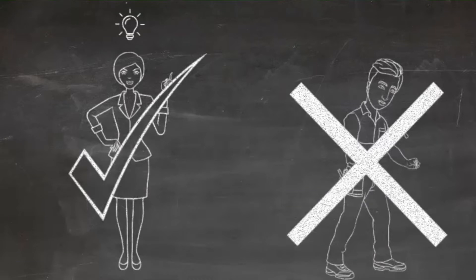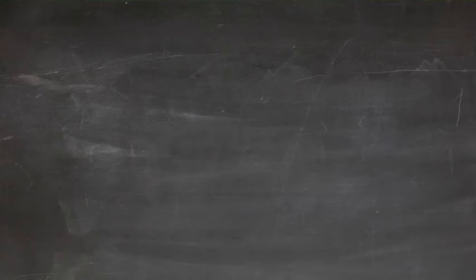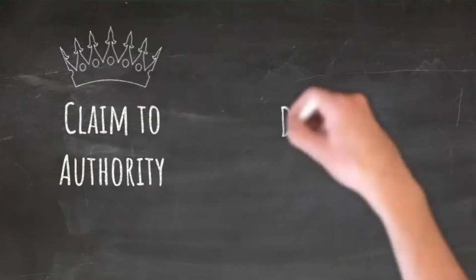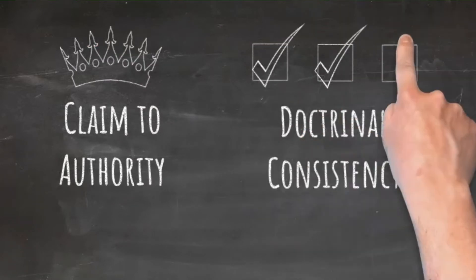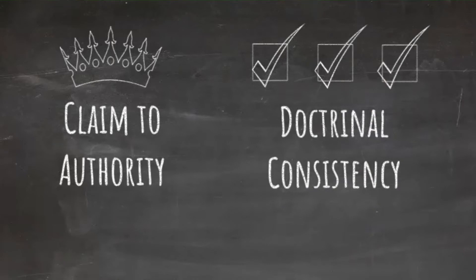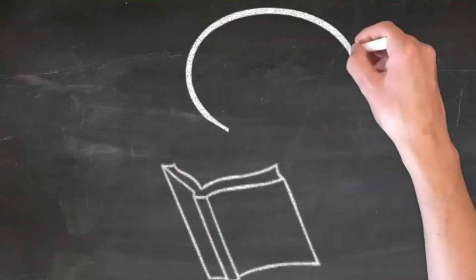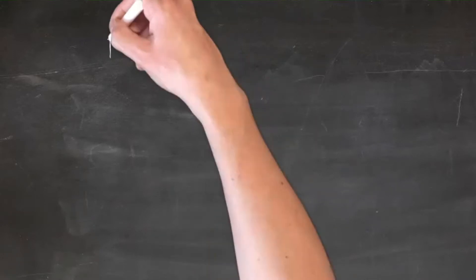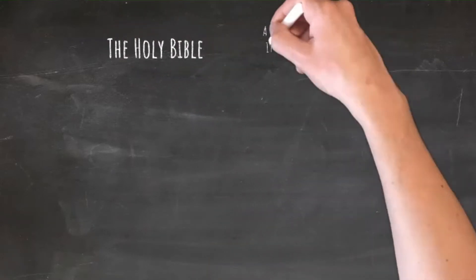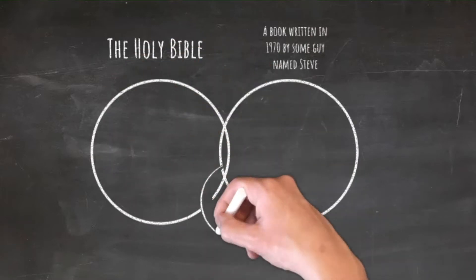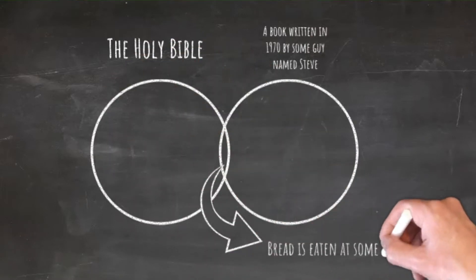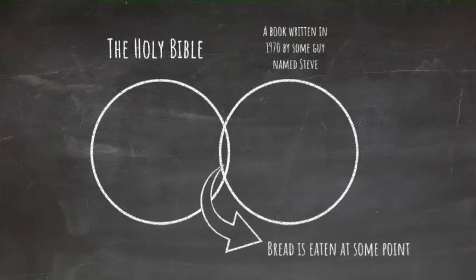So how do we recognize God's Word? Theologians have come up with really just two major things that we're looking for. We're looking for a claim to authority and for doctrinal consistency. So what does that mean? Well, when we're looking at a book of the Bible, we need to ask, does this book claim to be God's Word? And if it does, is the theology in that book consistent with what the rest of the Bible says about God and humanity and salvation?